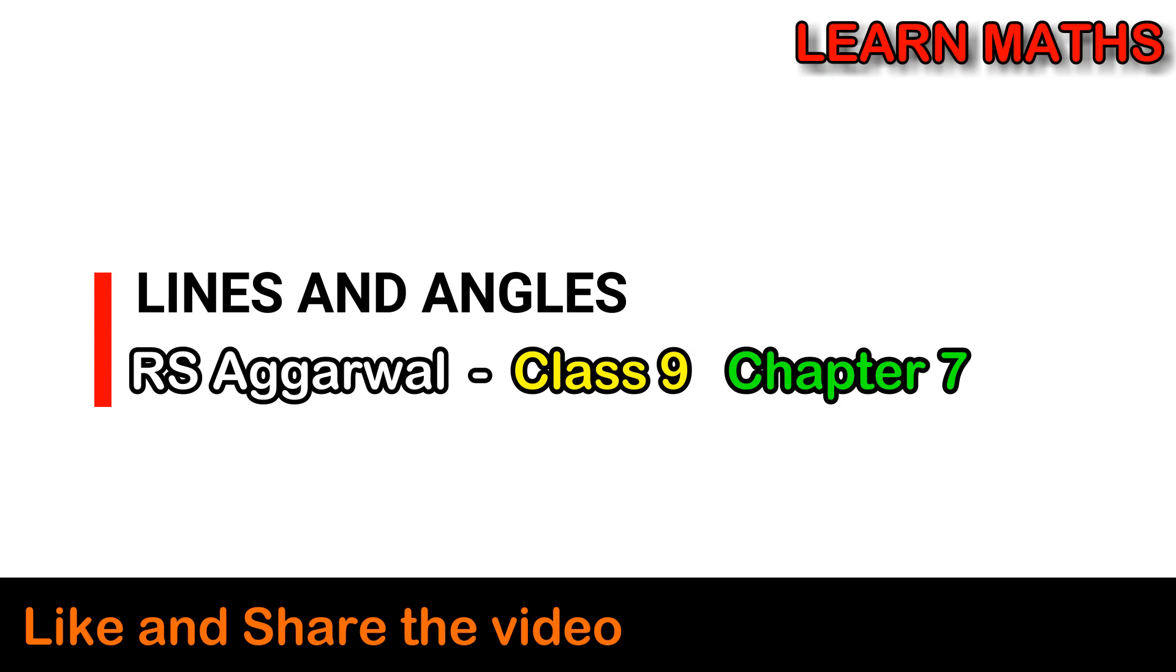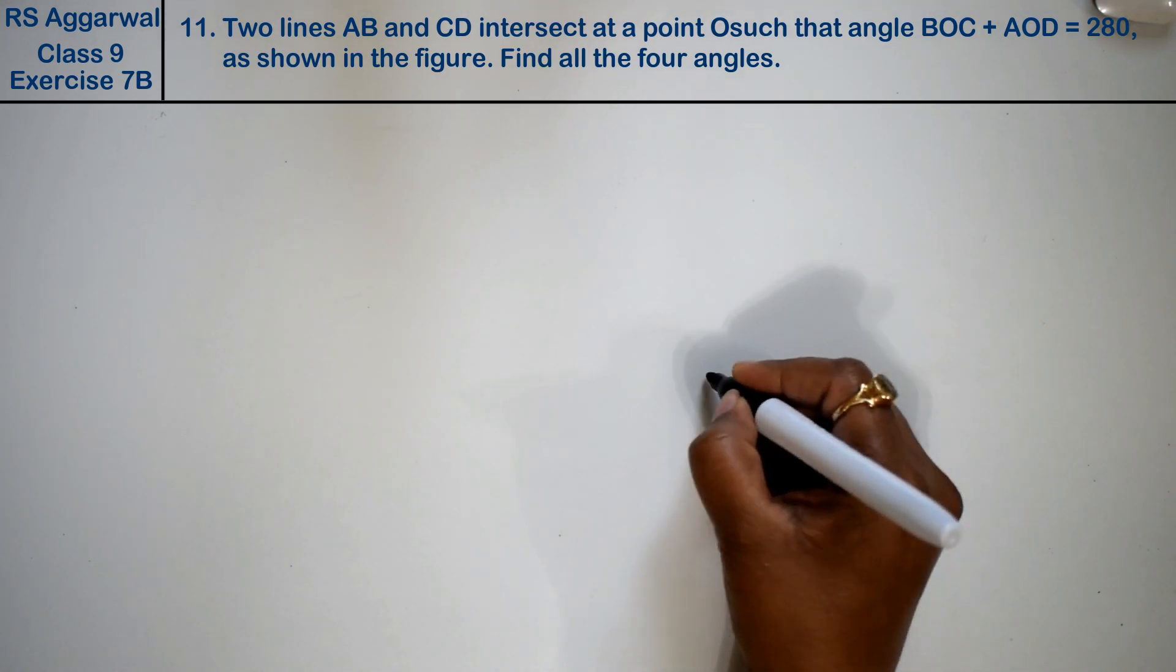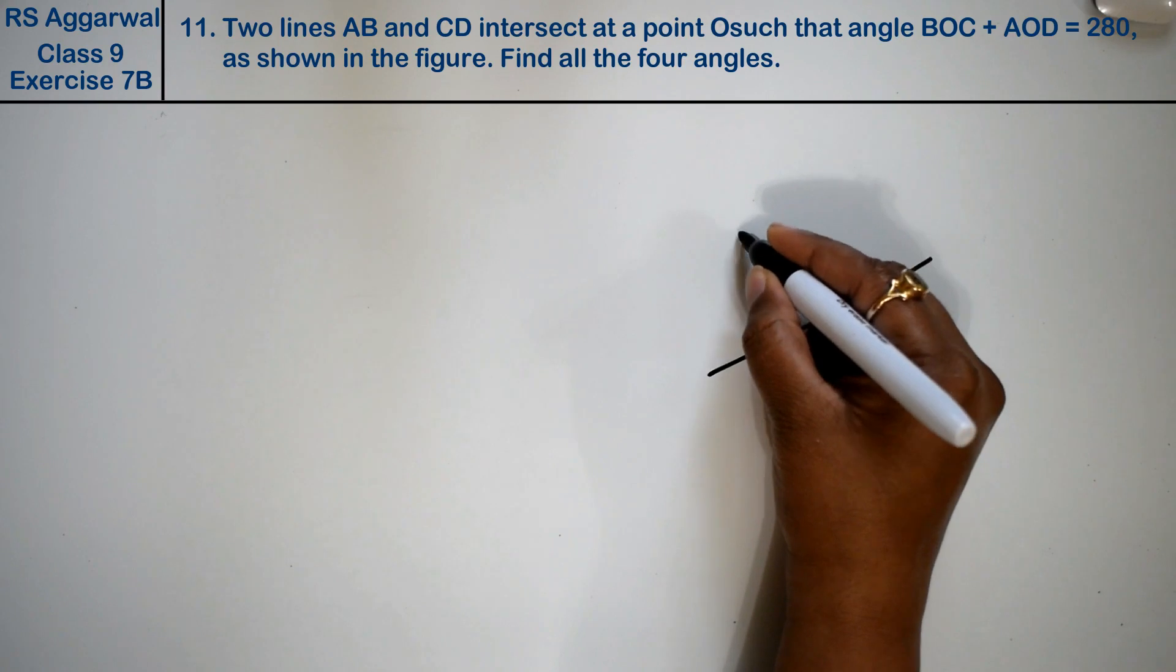Let's do question number 11 of exercise 7B, that is lines and angles. Question number 11 is two lines AB and CD intersected at O. Friends, let's draw a figure.